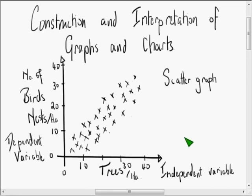That then is the scatter graph, and we will now have a look at some of the other common types of graph.